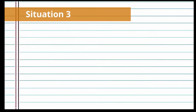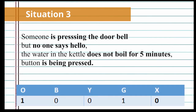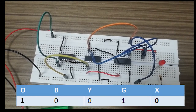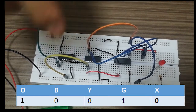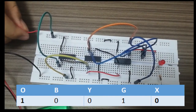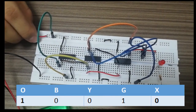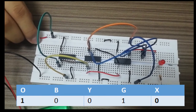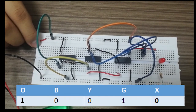Now for the situation when someone is pressing the doorbell but no one says hello, the water in the kettle does not boil for 5 minutes, and the button is being pressed. This is equivalent to G and O connected to high while Y and B are connected to low. When we connect the battery into our circuit, we will see that our LED does not light up.